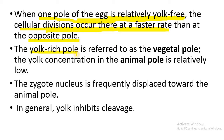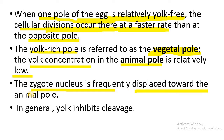The yolk-rich pole is referred to as the vegetal pole. The animal pole has relatively lower yolk concentration compared to the vegetal pole. The zygote nucleus is frequently displaced towards the animal pole. In general, yolk inhibits cleavage — where yolk concentration is higher, mitotic division will be slow.